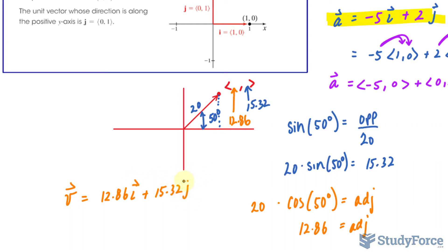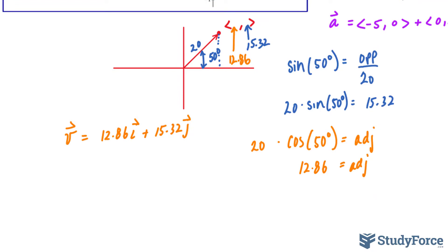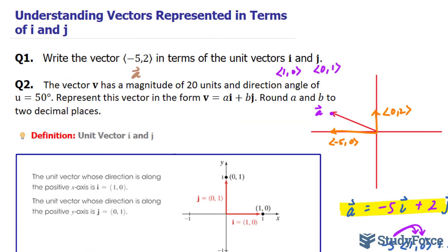And make sure you put arrows on top of the i and j because they too are vectors. This represents, again, (1,0), and this represents (0,1). And so there you have it.